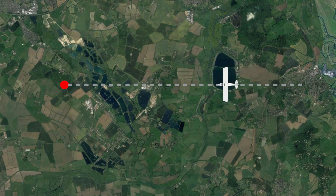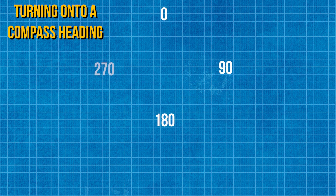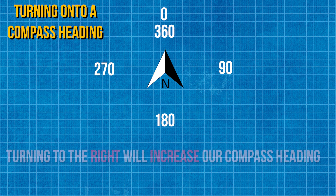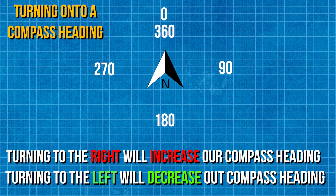Now we're going to talk about turning the aircraft onto a new compass heading. Our compass goes all the way from zero to 360 degrees. Zero is north, 90 degrees is east, 180 degrees is south, 270 degrees is west and 360 degrees is north again. If we turn to the right we're going to increase the number, and if we turn to the left we will decrease the number. An easy way to remember this is by turning it right up.